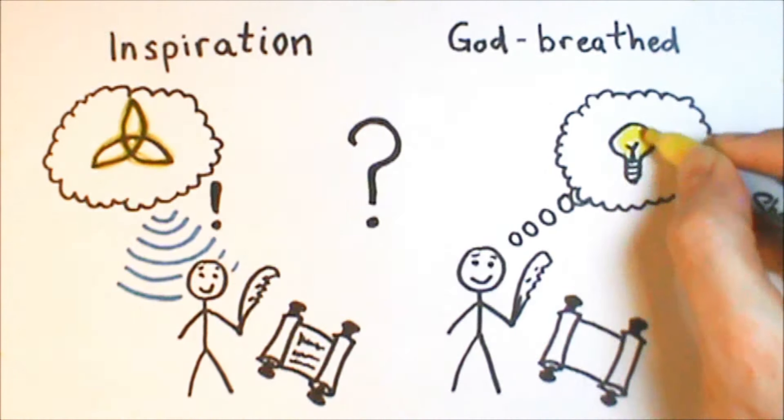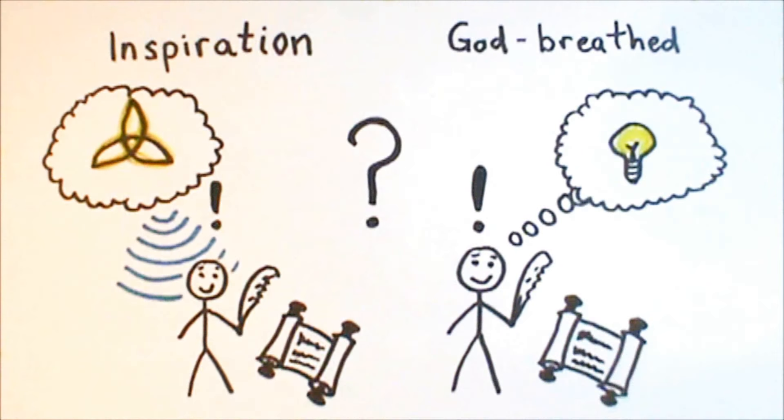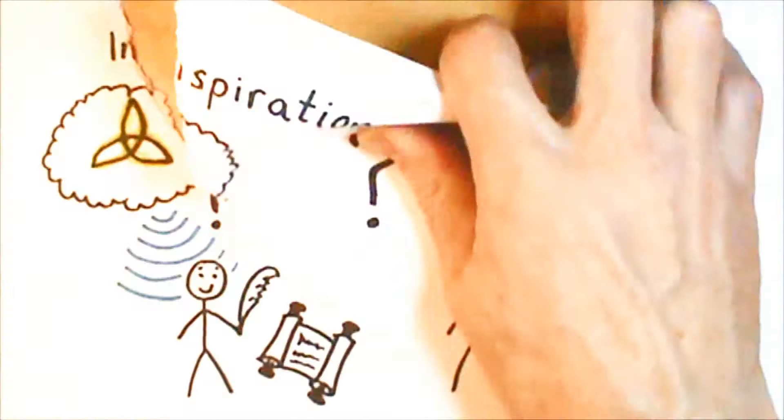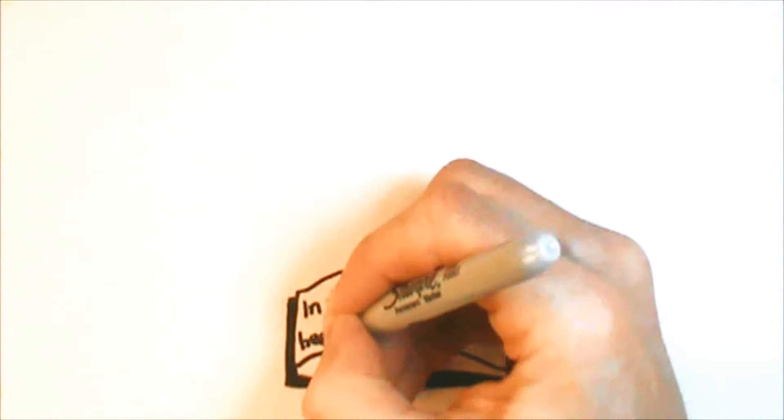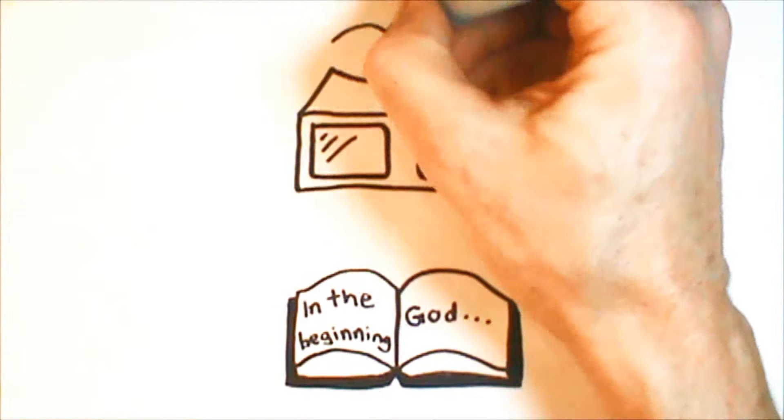Both of these approaches—seeing the Bible as simply a human creation, or seeing the Bible as something dictated word for word by God—are kind of like looking at a stereoscope through only one lens. The picture is going to be flat. If we really want the Bible to come to life, we need to view it through both lenses at once.